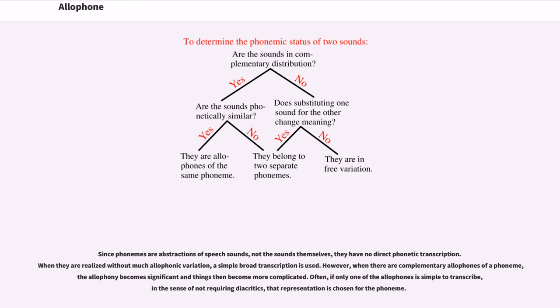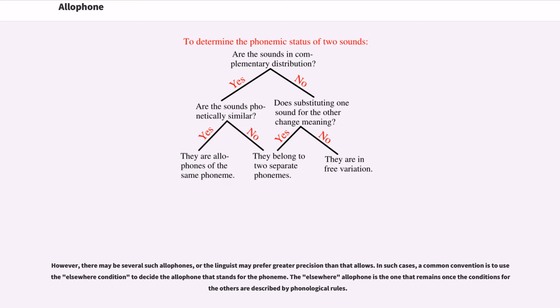if only one of the allophones is simple to transcribe, in the sense of not requiring diacritics, that representation is chosen for the phoneme. However, there may be several such allophones, or the linguist may prefer greater precision than that allows. In such cases, a common convention is to use the elsewhere condition to decide the allophone that stands for the phoneme. The elsewhere allophone is the one that remains once the conditions for the others are described by phonological rules.